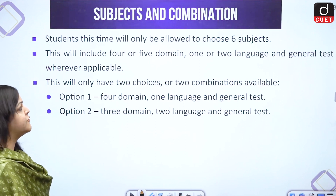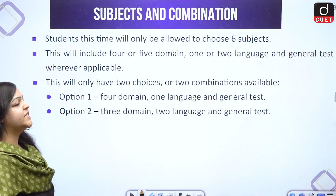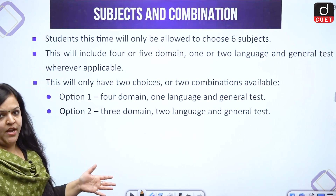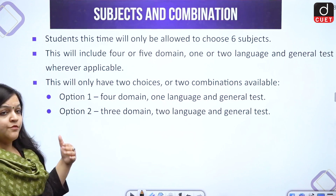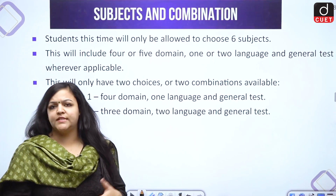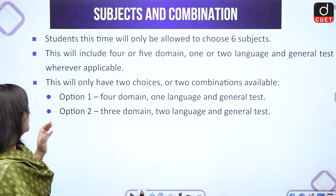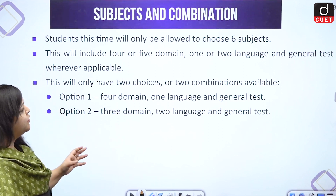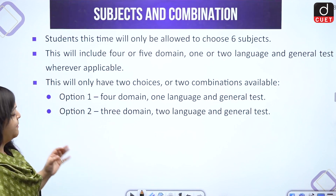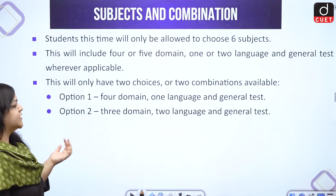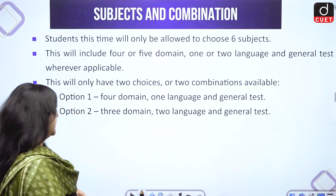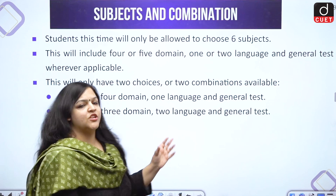Let's talk about subjects and combinations. Students this time have only been allowed to choose six subjects. Earlier it was ten, but hardly anyone was actually applying for ten combinations, so it has been reduced to six. This will include either four or five domain subjects, one or two languages, and a general test wherever applicable. You have two combinations available: Option one is four domain subjects, one language, and a general test; Option two is three domain subjects, two languages, and a general test.